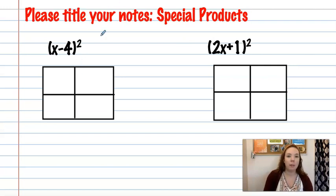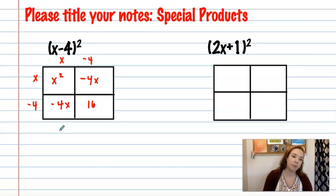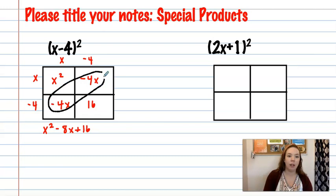So here I'm going to have my x minus 4 twice. That squared means we'd have x minus 4 times x minus 4. So I get x squared, negative 4x, negative 4x, and 16. So I have x squared minus 8x plus 16. Because remember, I'm going to combine those terms on my diagonal here. Negative 4 plus negative 4 is negative 8.